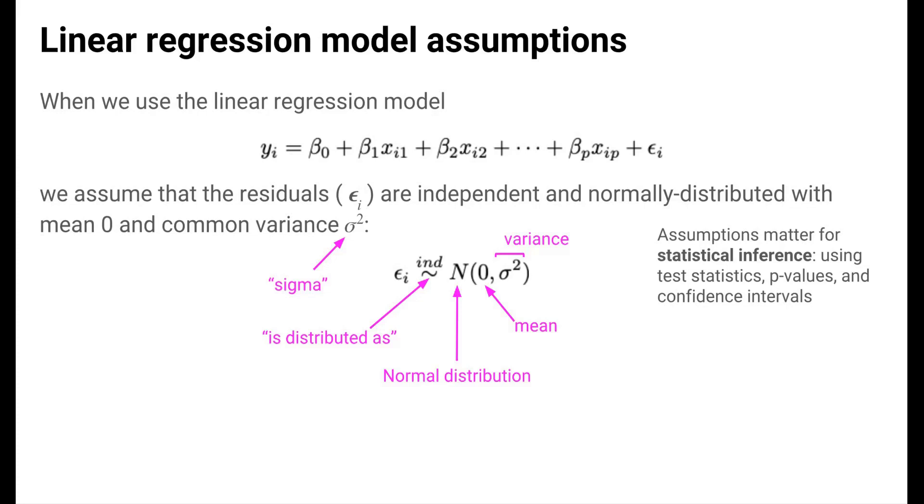The mathematical notation for this assumption is shown at the bottom. The tilde sign means is distributed as. The capital N stands for the normal distribution, and the two entries inside the parentheses indicate the two parameters that define the center and spread of the normal distribution. The first entry 0 is the mean, and the second entry, sigma squared, defines the variance, or the spread, of the normal distribution.